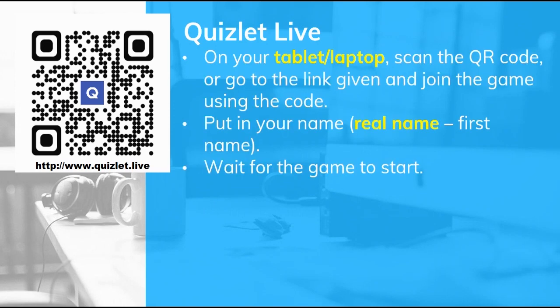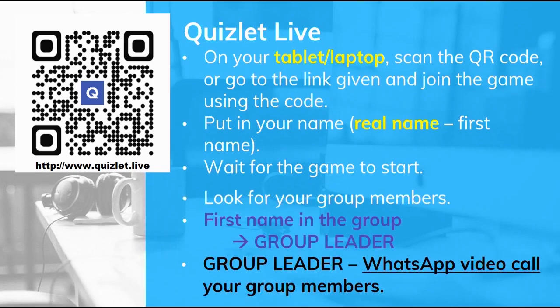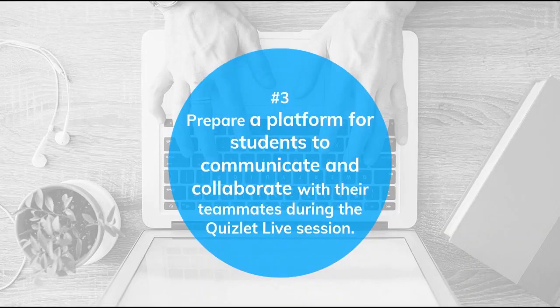On their tablet and laptop, I tell them to scan the QR code or go to the link given and join the game using the code. Similarly, they put in their real name and then wait for the game to start. Once I click start, they will see their group members and group name. Then the first name that appears in the group will be the group leader, and the group leader will do a WhatsApp video call to their group members. This is where my students use WhatsApp as the communication channel for coordination during the game. My last advice: make sure you prepare a platform for students to communicate and collaborate with their teammates during the Quizlet Live session. Choose the best one for their online learning environment.